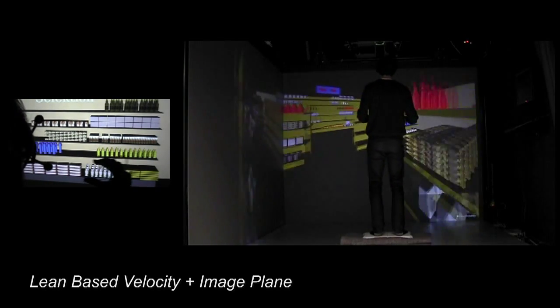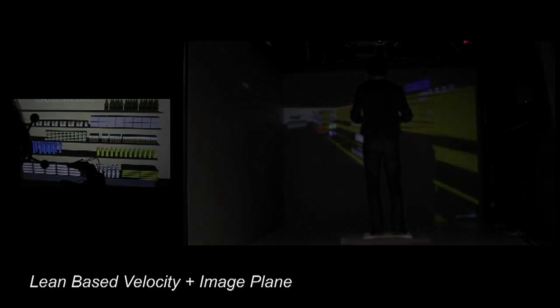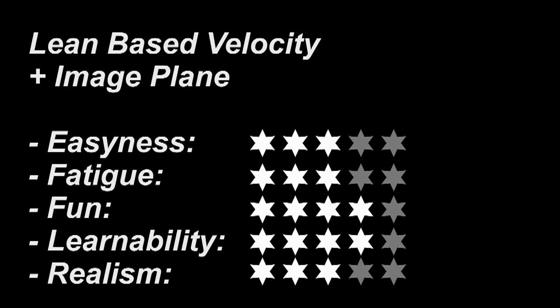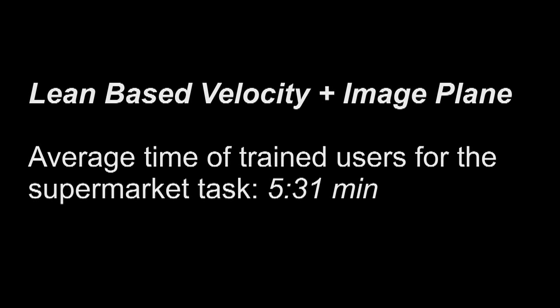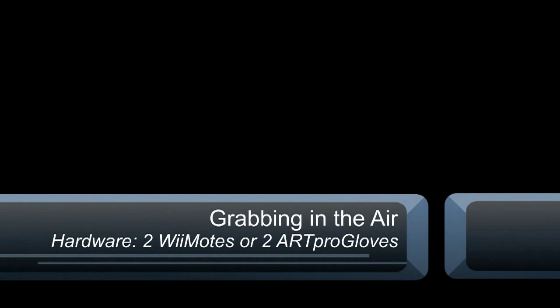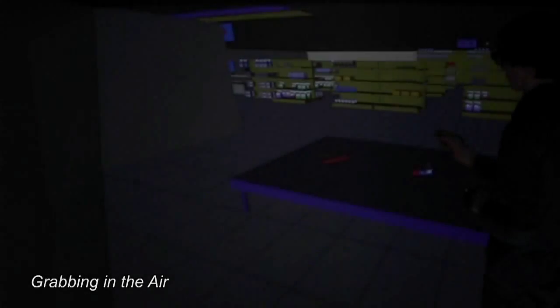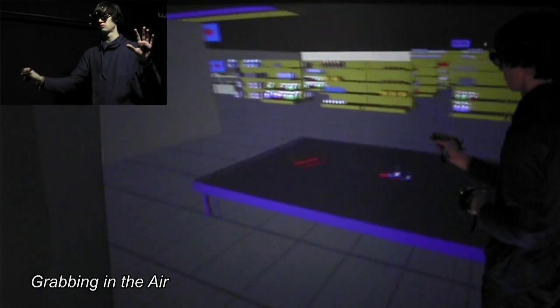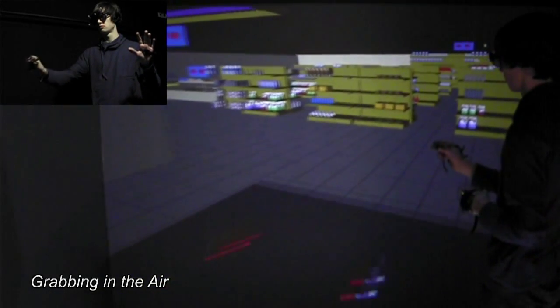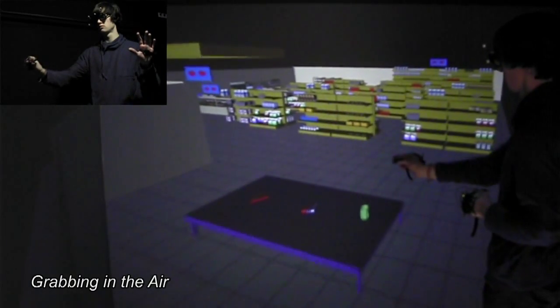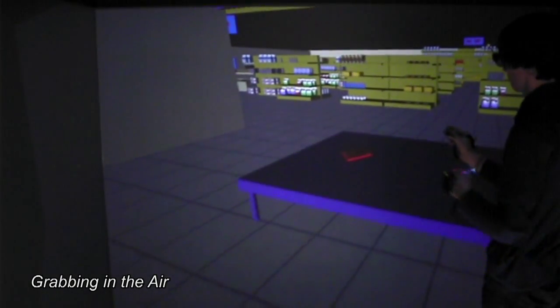An especially fun way to travel is provided by the grabbing in the air method. If you form one hand into a grasping gesture and move it, the scene will follow that movement. If you repeat the gesture with both hands and change their distance to each other, it will trigger the zoom in and out functions. The pull function is similar to the zoom function, with the exception that the distance between the hands stays constant during movement.